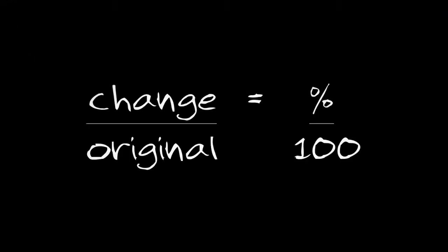Take the old and the new and subtract it too. Put it over the original, make a fraction. Percent proportions — cross multiply, divide, you know what to do. Take the old and the new and subtract the two, put it over the original, make a fraction. Percent proportion, you cross multiply divide. You know what to do.